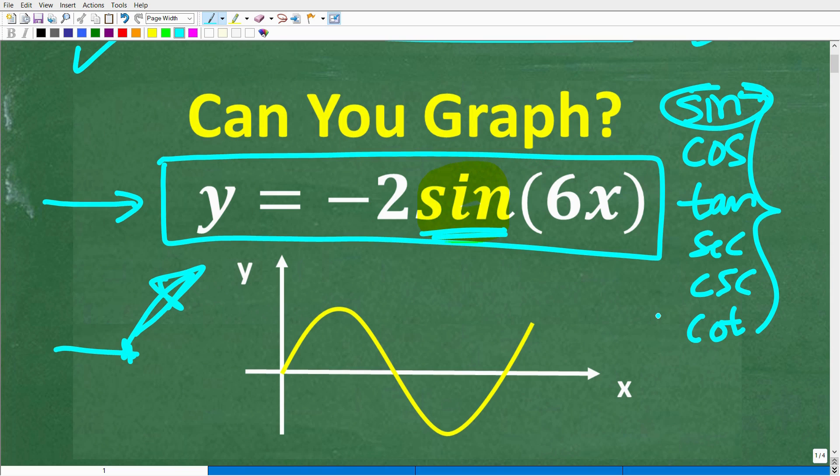You're like, yes, Mr. U2 Math Man, I have to understand how to graph cosine, tangent, secant, cosecant, cotangent. These are problems that you will definitely face on your math exams. Okay, so let's go ahead and get into the solution on how to graph y equals negative 2 sine 6x right now.